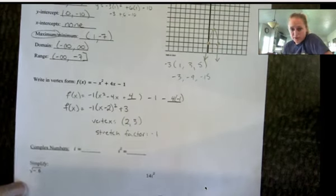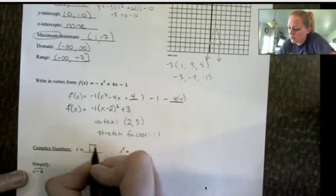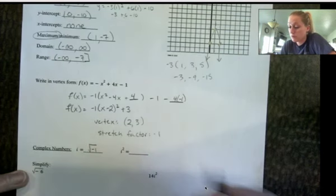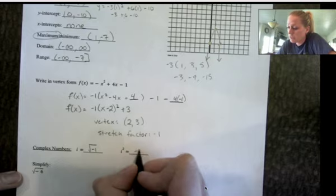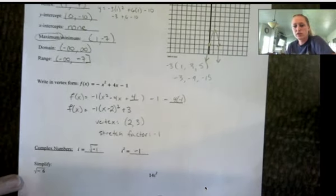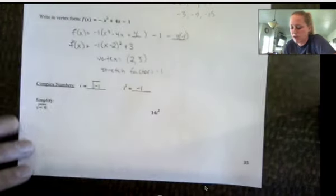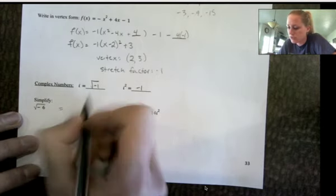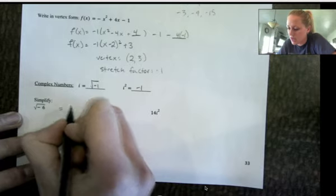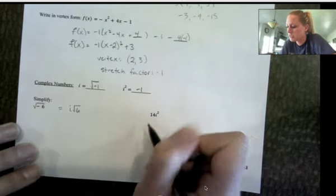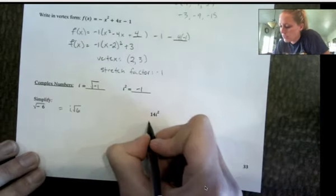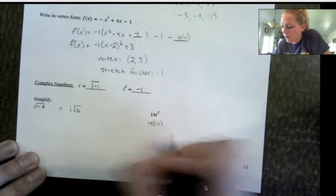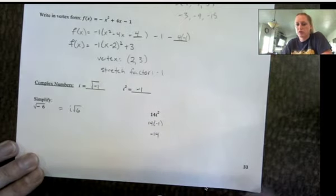Complex numbers. Remember by definition, square root of negative 1, square root of negative 1. And i squared is negative 1. We want to try and rewrite things in terms of i. So square root of negative 6 is the same as negative 1 times 6 underneath the square root. So that is the same as i root 6. 14i squared is the same as 14 times negative 1 or negative 14.